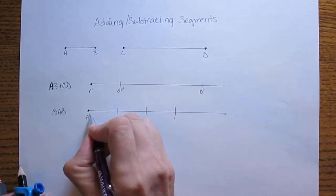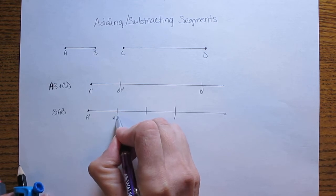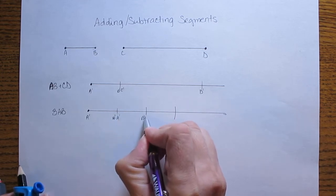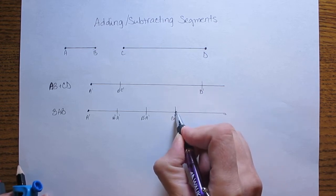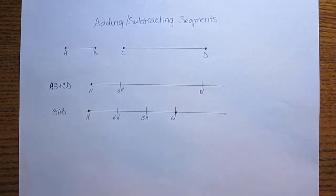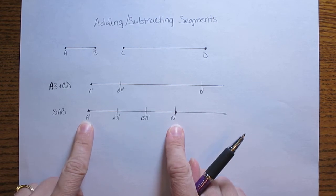And you can write this A prime, B prime, A prime, B prime. So from here to here is 3AB.